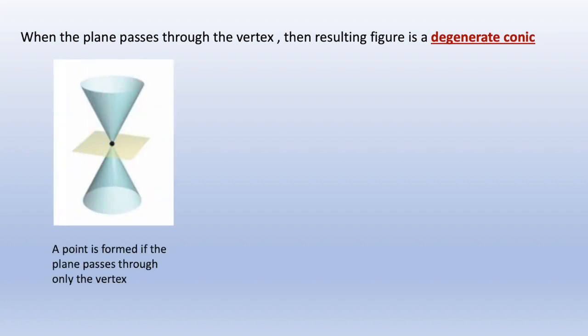The first one is a point. A point is formed if a plane passes through the vertex.